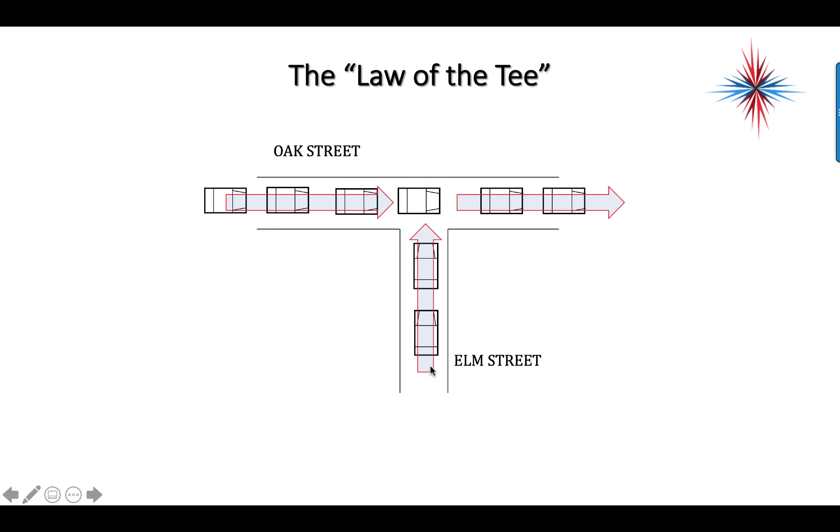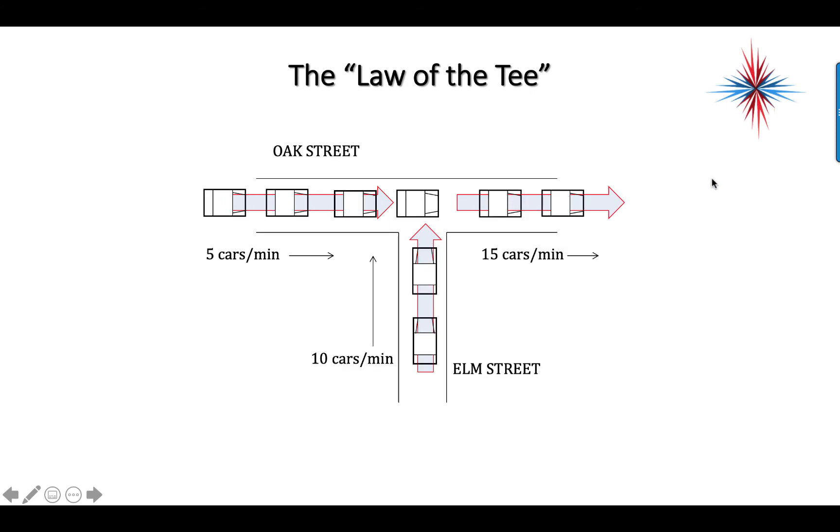If I have three cars over here, two cars over here, after they meet I have five cars coming out. If Oak Street has five cars a minute and Elm Street has 10 cars a minute, coming out to the right I have to have 15 cars a minute because it doesn't have any place else to go.